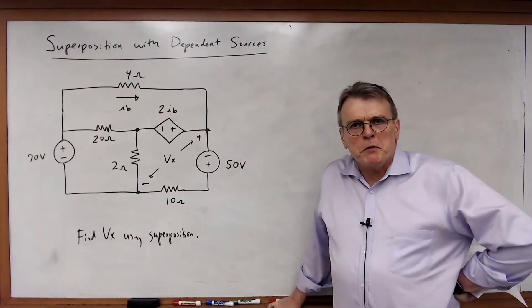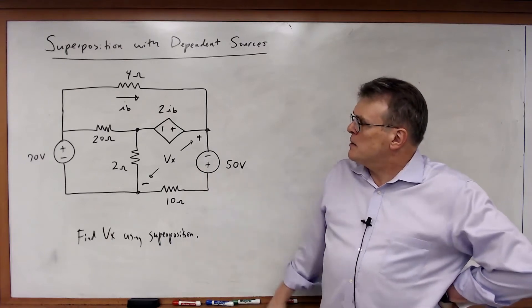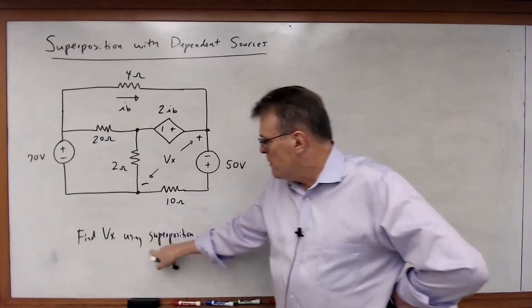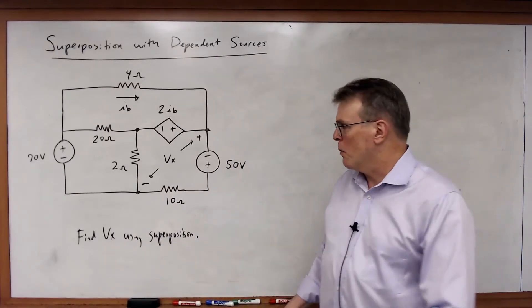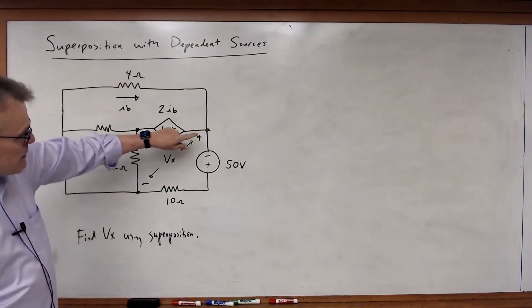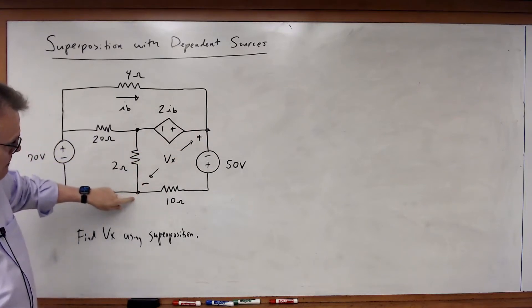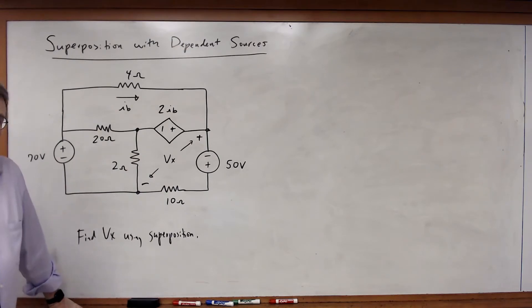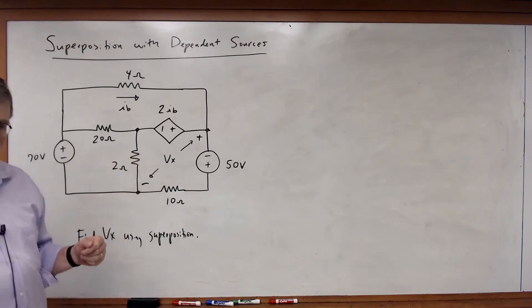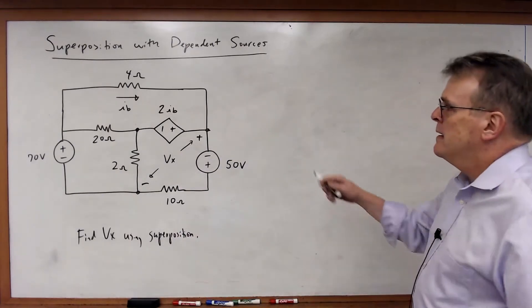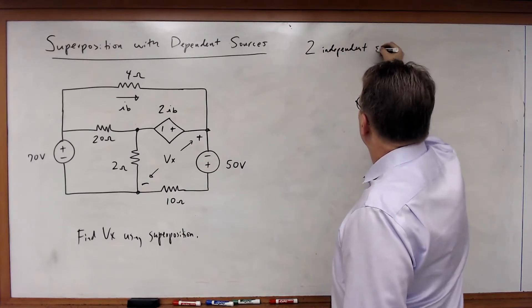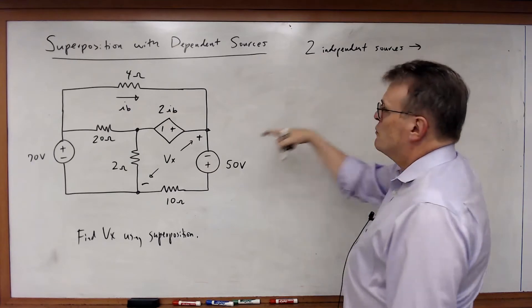Let's look at an example of superposition. In this case, I've got a circuit that has a dependent source in it. So let's work this using superposition. I want to find the voltage Vx using superposition in this case. Note that Vx is the voltage between that node and that node, so it's actually the voltage across two elements, not just one. We're going to apply what we know about nodal analysis and use that to solve this with superposition. I've got two independent sources, which means I need two partial circuits.